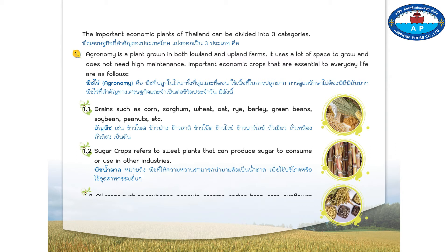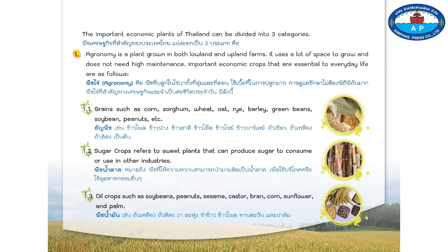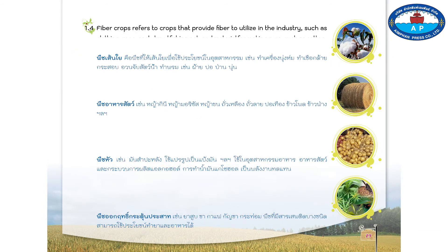One point three, oil crops such as soybeans, peanuts, sesame, castor, bran, corn, sunflower, and palm. One point four, fiber crops refers to crops that provide fiber to utilize in industry such as clothing, rope, sack, trawl fishing net, and material for making rugs such as cotton, jute, ramie, and kapok.